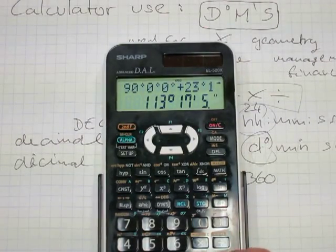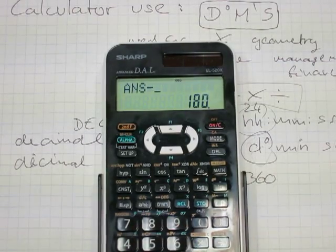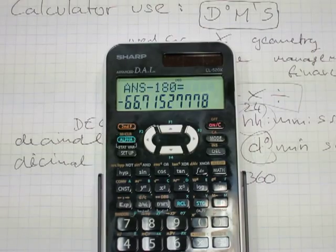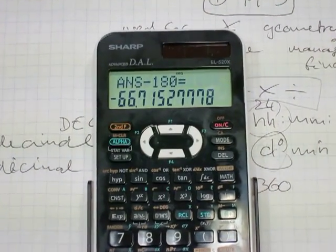Now this will be a negative number, but just ignore it. There's 66.712525 degrees, and there's some more digits, but the calculator can convert it into degrees, minutes, and seconds with the press of a button.